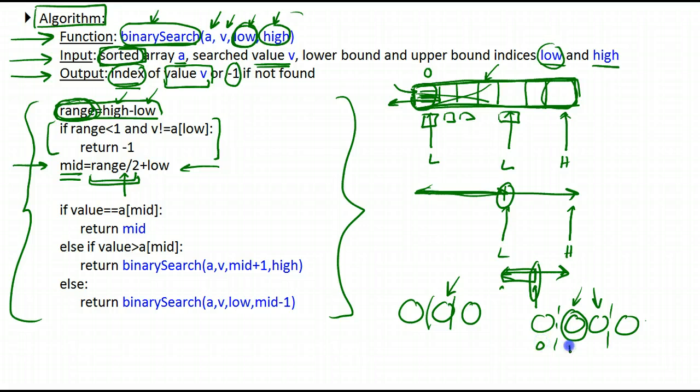So suppose this was zero, one, two, three. Then when you perform this you will get the range, suppose this was low, this was high, the range will be three minus zero, so three. And then three divided by two, this is integer division, remember that. This will give you one. And then you add low to it, low is zero, so it's equal to one, and so this is what comes out as your mid-element.